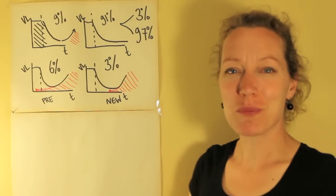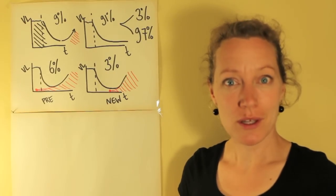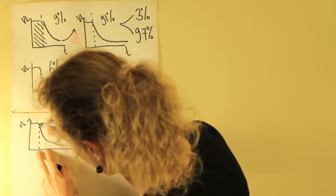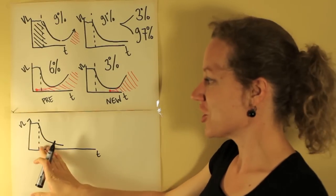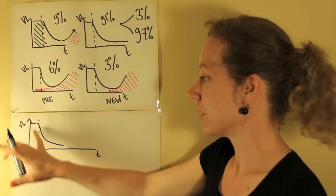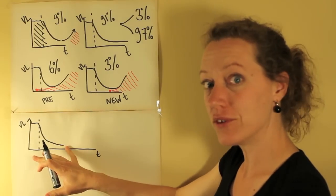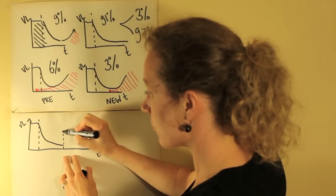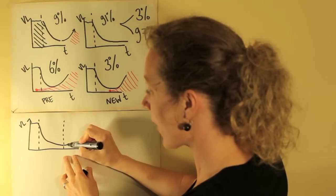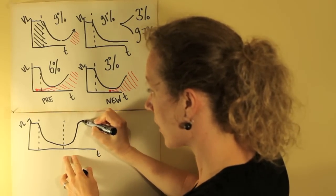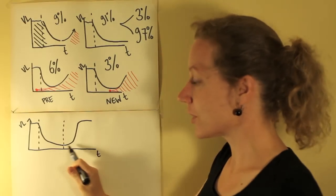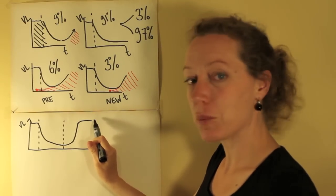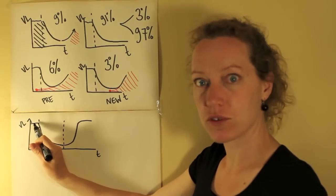However, when patients interrupt treatment the virus can grow again. So if this patient had started treatment here, the viral load will go down but then if he or she interrupts treatment the amount of virus will go up again. And after an interruption of about one month, the amount of virus will be the same as it was before treatment ever started.